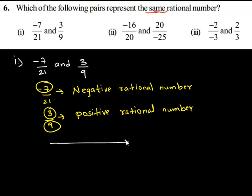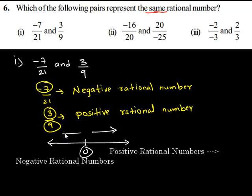If this is a number line with 0 at the center, then the positive rational numbers are represented on the right side of 0 and the negative rational numbers are represented on the left side of the 0.